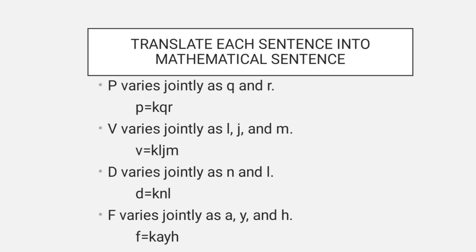Translate each sentence into a mathematical sentence. P varies jointly as Q and R: P equals K times Q times R. V varies jointly as I, J, and M: V equals K times I times J times M. D varies jointly as N and L: D equals K times N times L. F varies jointly as A, Y, and H: F equals K times A times Y times H.